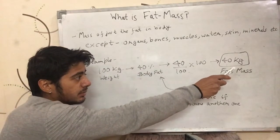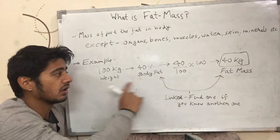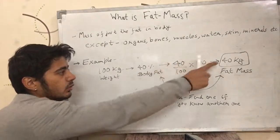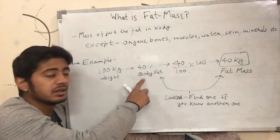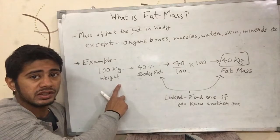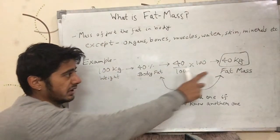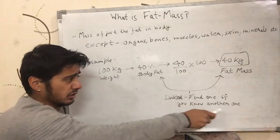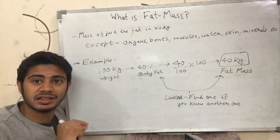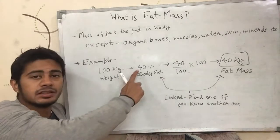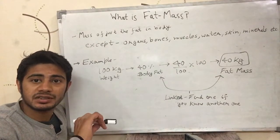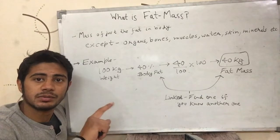So if you know that a person's fat mass and body fat percentage, everyone knows how much weight they have — the weight is 100 kg. You can figure out the weight of the fat mass. If you know the body fat percentage, you can multiply it to get the fat mass. Fat mass, body fat percentage, and total weight are all related. Just remember that fat mass is the amount of fat in the body. If you know the body fat percentage, fat mass can be calculated — for example, 100 kg with 20% body fat means 20 kg of fat mass.